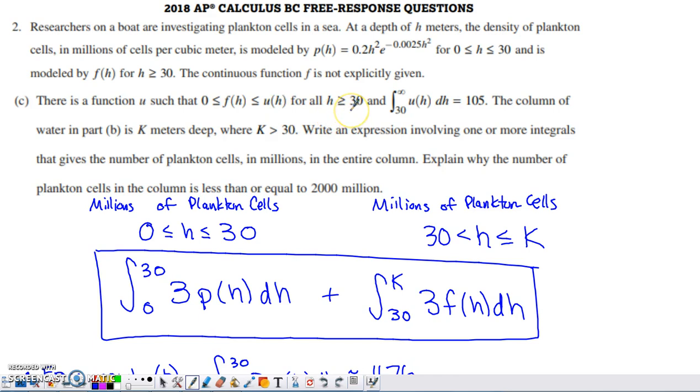And that new density function is less than or equal to some other function, u of h, and that's going to hold for all h's greater than or equal to 30. They tell us that the definite integral of u of h from 30 onward to infinity is equal to 105. So this improper integral has a fixed value of 105, finite value of 105.